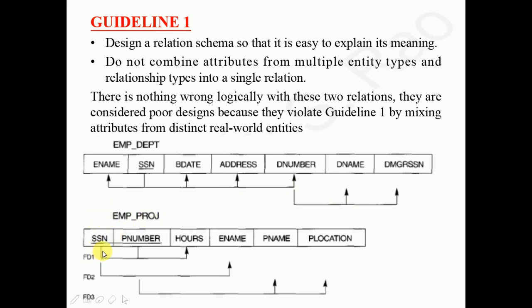The employee-project relation with SSN, project number, HARS, employee name, project name, and project location is also a poor design because it includes multiple attributes from multiple entity types. We can decompose this into three relations: SSN and project number give HARS; SSN alone gives employee name; project number gives project name and project location. Decomposing a universal relation into multiple relations eliminates redundancies, null values, and anomalies.